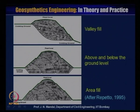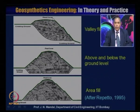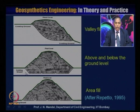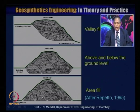There are different types of landfills. One may be placed in a valley fill — this is the existing ground and you are dumping all kinds of waste material. This is the final cover; this is called the valley fill. Another type is above and below the ground level — this is the existing ground level and above it you are dumping waste material, with a final cover on top. This is given after a report in 1995.